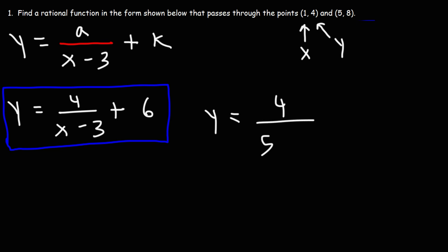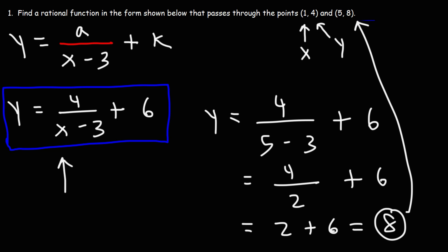Now we can check the other point. Let's plug in an x value of 5. 5 minus 3 is 2, and for some reason I put an 8 here instead of a 6. So let's correct that. 4 over 2 is 2. 2 plus 6 is 8. So that gives us the correct y value. So we know we have the right answer. So that's how you can check your work to make sure that you have the right function that passes through those two points.